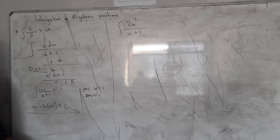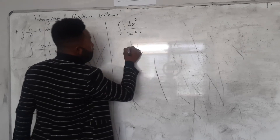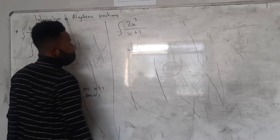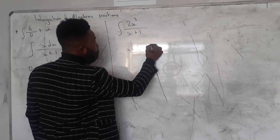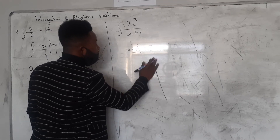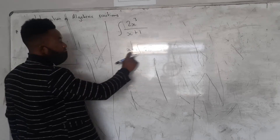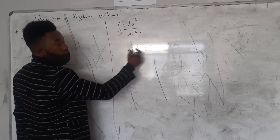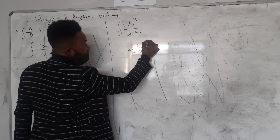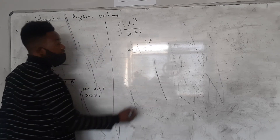You also have to use long division — the same thing that we did. So now I have x plus 1 as my divisor, and then I have 2x to the power 3. And then dividing this one by that one, the x cancels to give 2x squared.